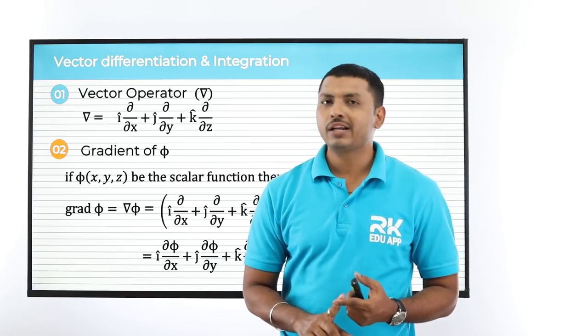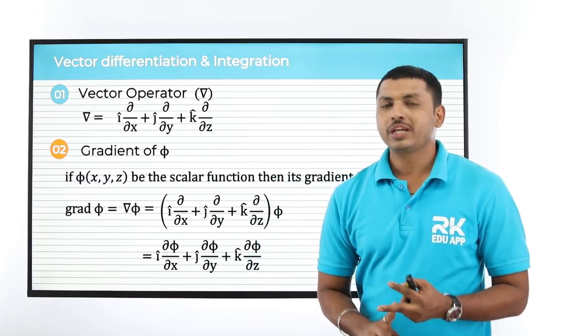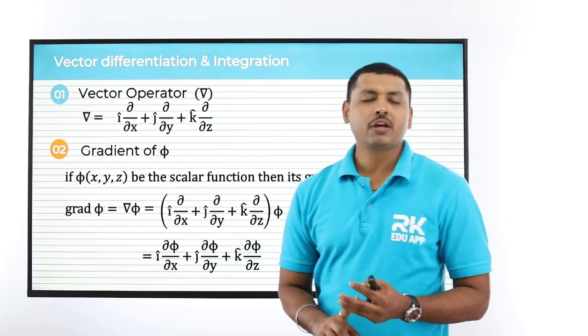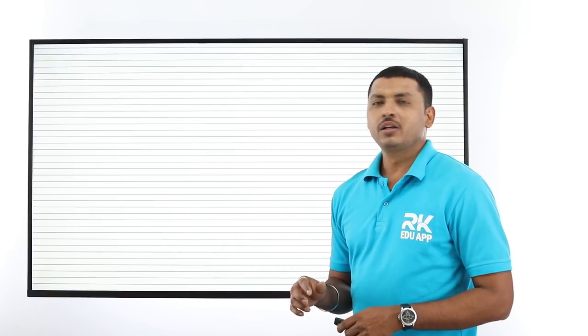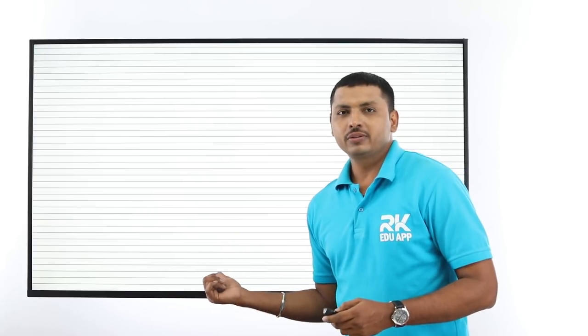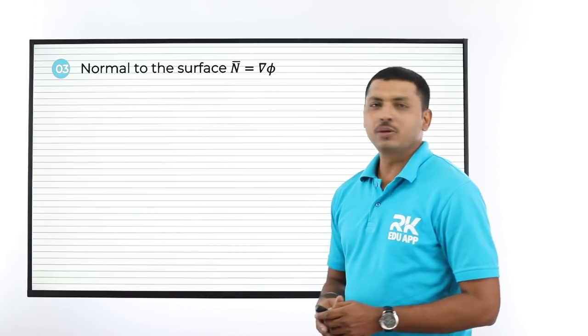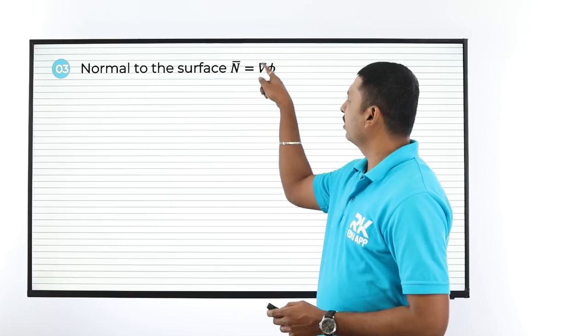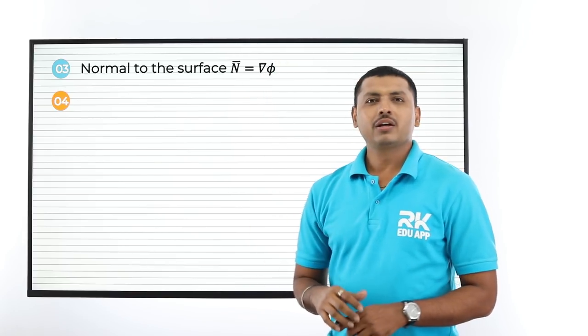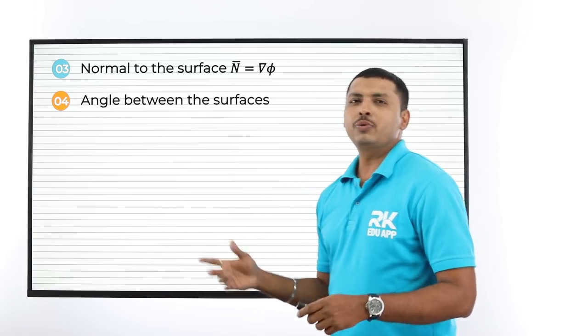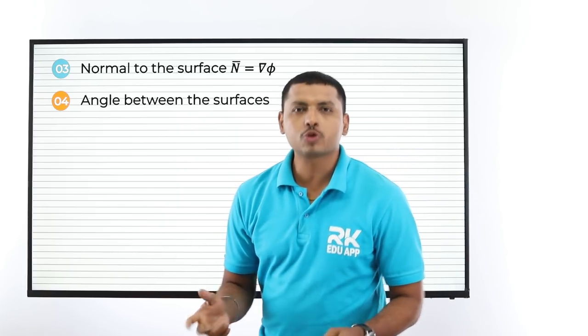The gradient formula is equal to i del φ/del x plus j del φ/del y plus k del φ/del z. If a line goes touching a surface it is called a tangent, but if it is perpendicular to the surface it is called a normal. So the gradient is called the normal to the surface.